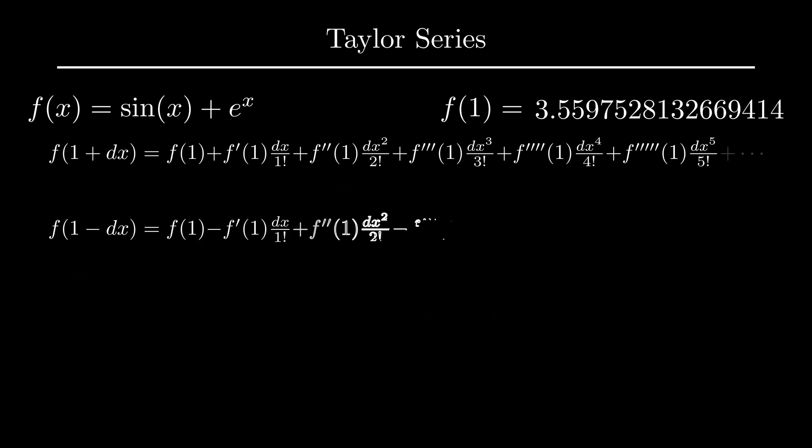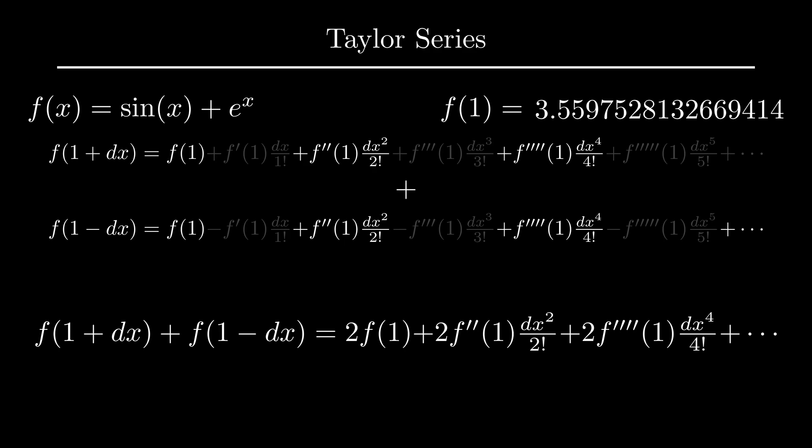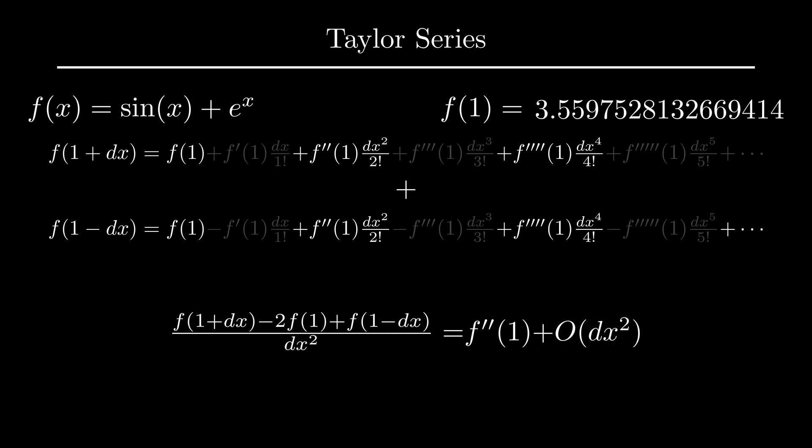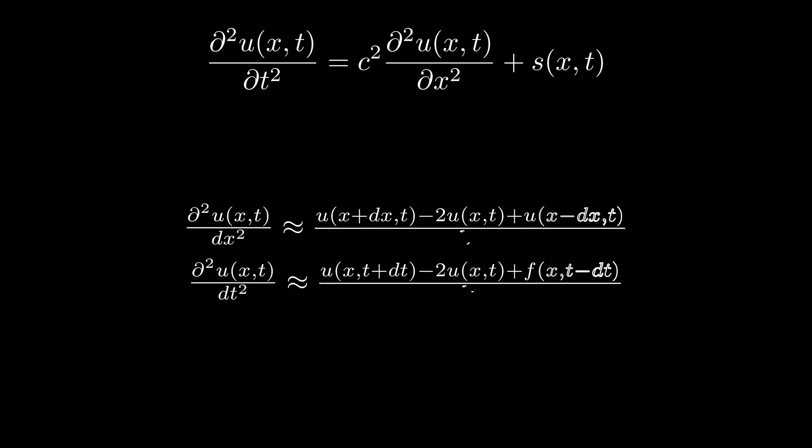Similarly, I can write another equation to approximate the value of f at x minus dx. Adding these two equations, the odd derivatives cancel out. Now if I rearrange the terms, second order derivative gets isolated on the right hand side with fourth and higher order derivative terms. I can ignore these terms as long as I keep in mind that these terms are of the order of dx squared. So this gives a way to approximate second derivative with respect to x and t, which I can plug back into the PDE itself.